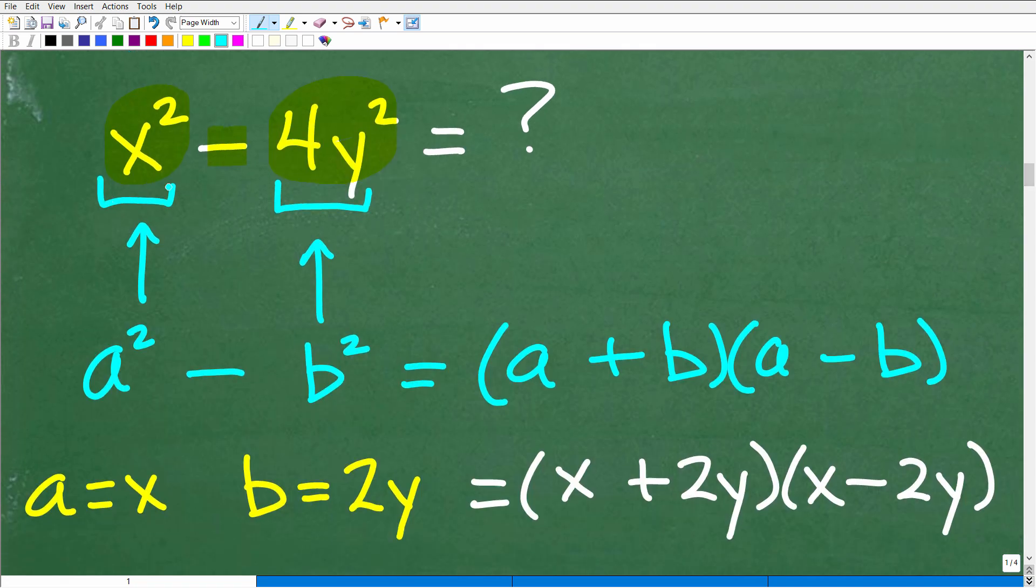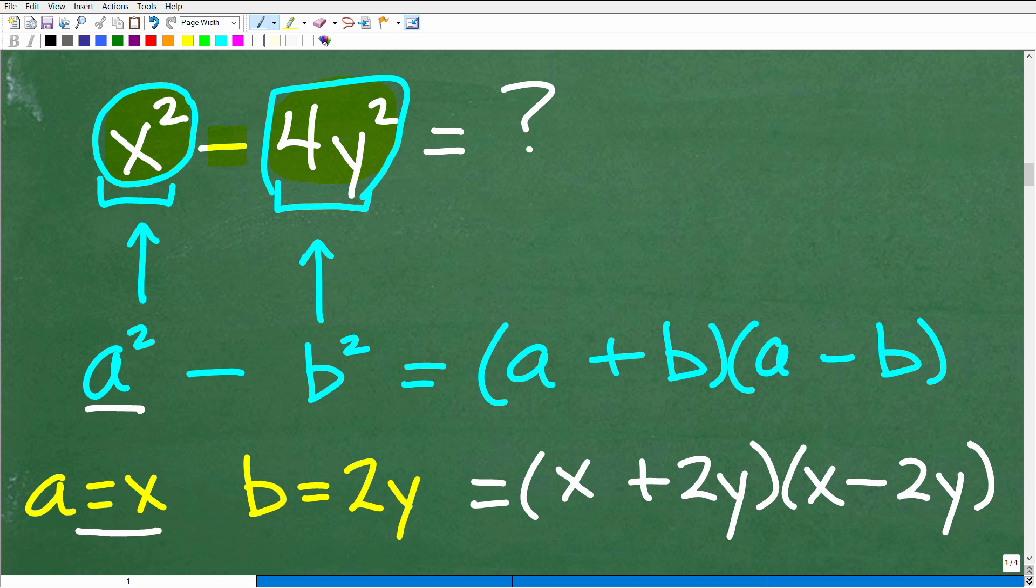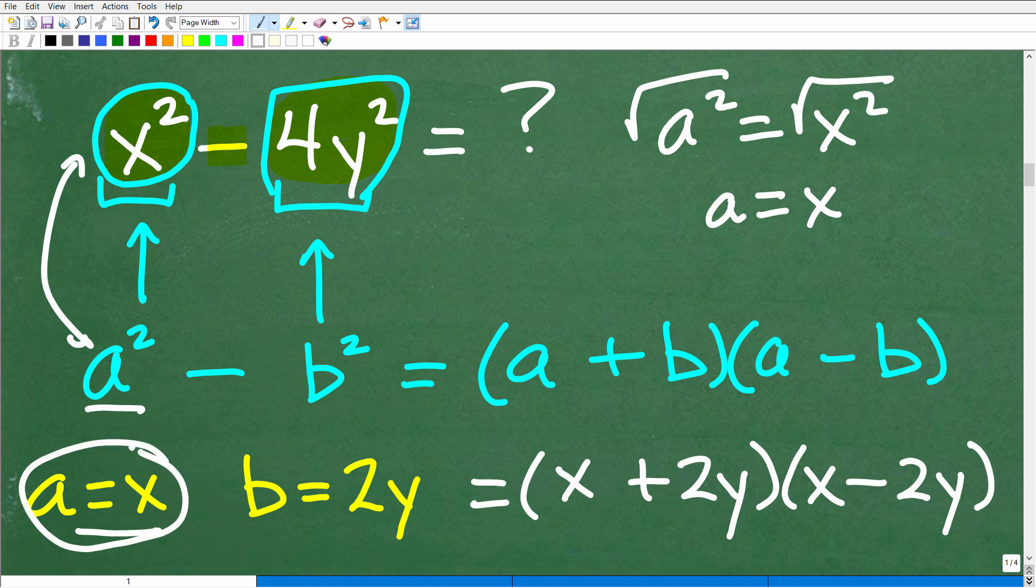Okay, so looking at this right here, if this is the difference of two squares, this whole thing right here would represent our a squared. And this whole thing right here, this 4y squared would represent our b squared. So I need a and b, not a squared and b squared. So how can I get a? Well, a is going to be equal to x. But how did I get that? Well, if a squared is equal to x squared, like that, so I'm indicating right here, we want to know what a is. So just simply take the square root of both sides. So a is going to be equal to x. So a is our x, and of course, we're going to be plugging that into this formula here in a second.